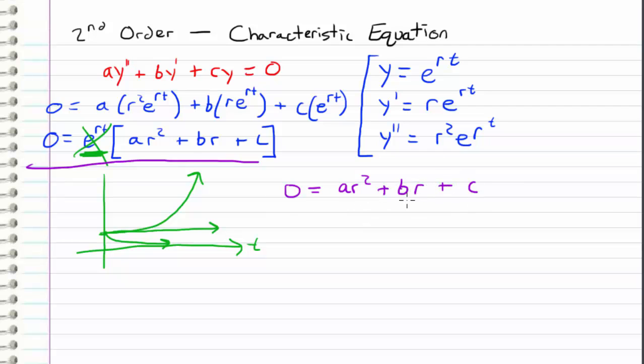And now we can use the quadratic equation to solve for r. So r is going to be equal to negative b plus or minus the square root of b squared minus 4ac, all over 2 times a.